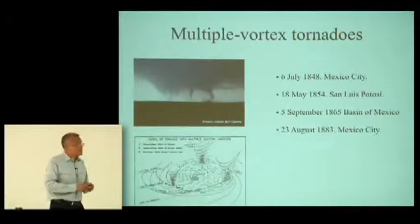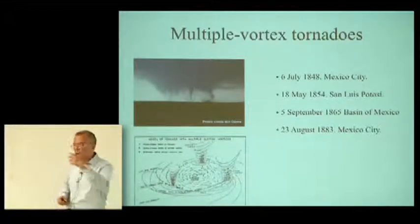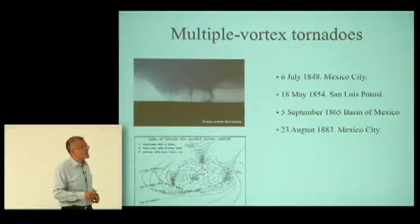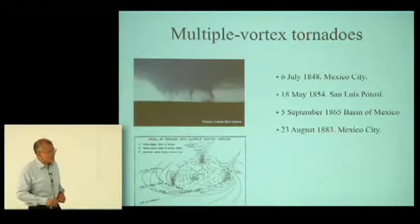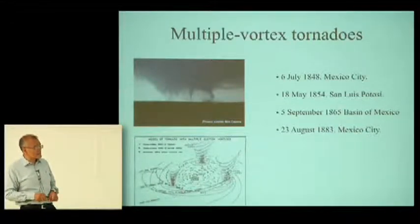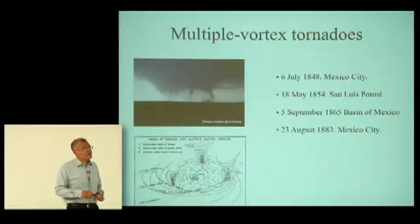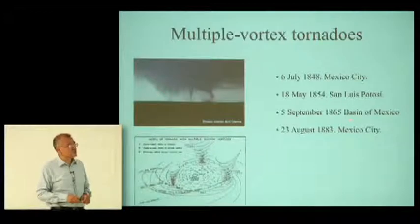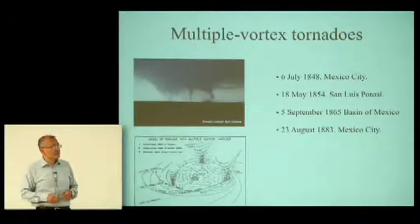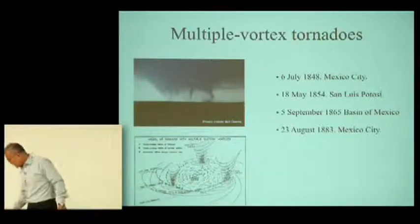Multiple vortex tornadoes are events where there is not one single vortex tube reaching the surface but several, as in pictures from the United States showing three of them. This is a classical diagram by Fujita in 1971 explaining the central vortex and the suction sub-vortices. I have been able to ascertain the occurrence of four such multiple vortex tornadoes in Mexico — three of them in the Basin of Mexico and the outskirts of Mexico City, and one north of Guanajuato.